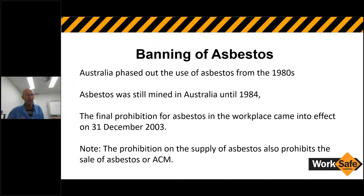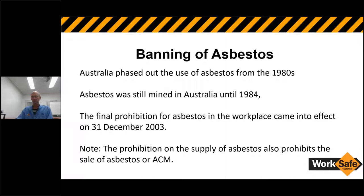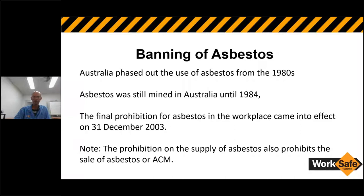Australia started phasing out the use of asbestos in 1980, but asbestos was still mined in Australia up until 1984. The final prohibition of asbestos in the workplace came into effect on the 31st of December 2003. Even though we started banning and phasing it out in the 1980s, there was quite a long lead time because of existing stockpiles, old supplies, and sometimes no available replacement product, before it became totally banned on 31st December 2003. That prohibition also covered the supply and sale of asbestos or asbestos containing materials.